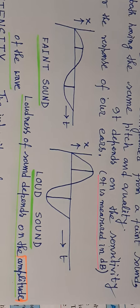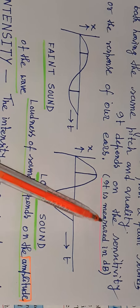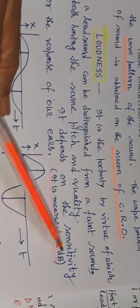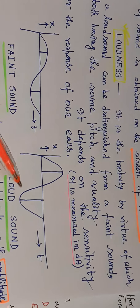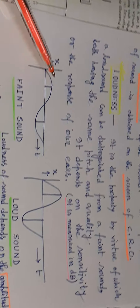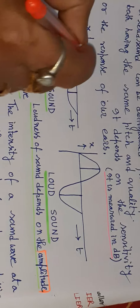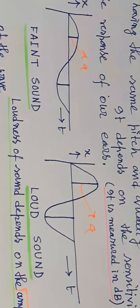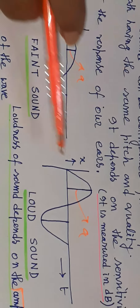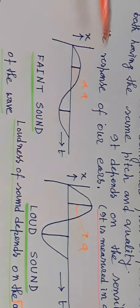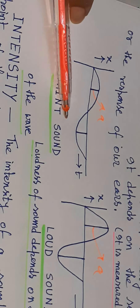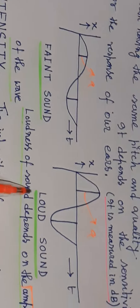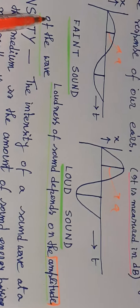Loudness is a subjective property. It is measured in decibels — the decibel level or sound level. When amplitude is high, it is a loud sound. When amplitude is low, it is a faint sound. Loudness of sound depends on the amplitude of the wave.